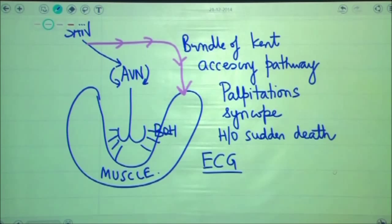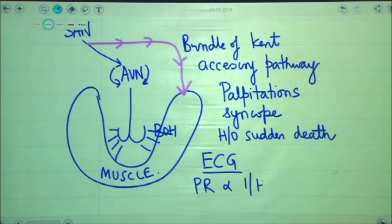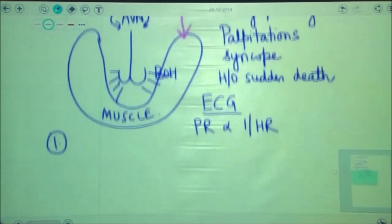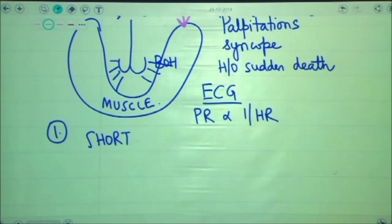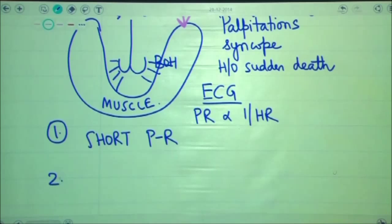When we run the ECG, since the PR interval is inversely related to heart rate, we will always find that all patients of Wolf-Parkinson-White syndrome will have a short PR interval. The second ECG finding in these patients is related to the QRS complex.